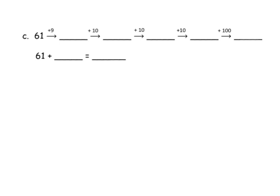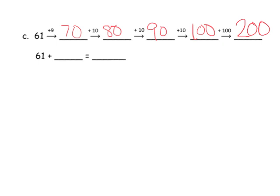Let's practice one last one with the arrow method. We're going to do 61 plus 9, going up to the next multiple of 10 — that's 70. Then 70 plus 10 gives us 80, 80 plus 10 gives us 90, 90 plus 10 gives us 100, and 100 plus 100 gives us 200. So what did we add all together? We added 9, 10, 10, 10, 10, and 100 — all together we added 139. So 61 plus 139 equals 200.